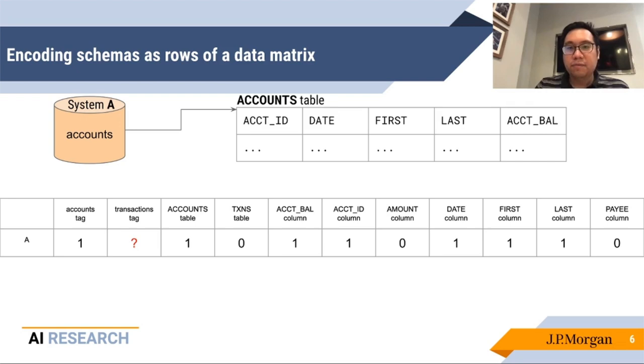So here we see that system A has the accounts tag, but not about transactions tag. We have a table that's called accounts, but not a table called transactions, and we have columns that have these names that we see. We put them into a matrix. That's the matrix we get for this particular system. Now here you see that I've encoded the absence of the transactions tag as a question mark, rather than a zero. Now this is up to this particular use case that we're looking at.